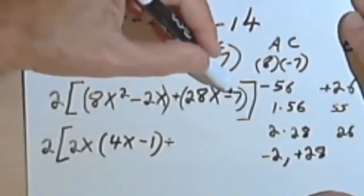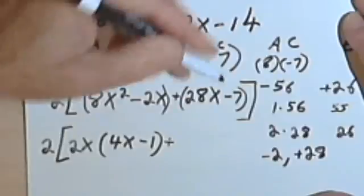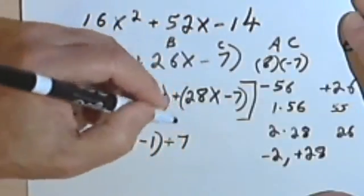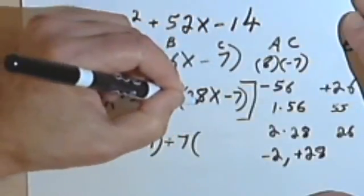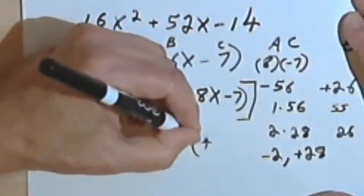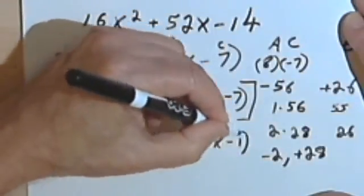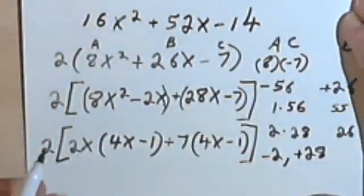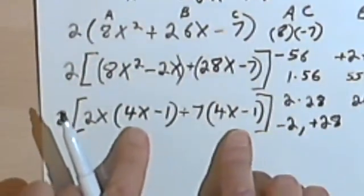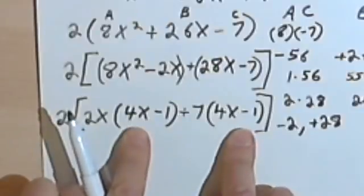Going on to the second set of parentheses, I've got 28x minus 7. I can divide out a 7. I can factor it out. So that's going to be 7. 28 divided by 7 is 4. So that's 4x. Negative 7 divided by 7 is negative 1. And what do I have? I've got a 4x minus 1 and a 4x minus 1.